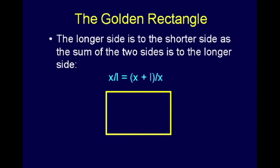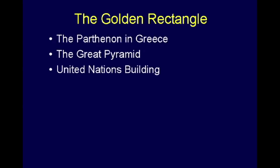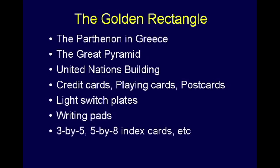That rectangle is called by artists, scientists, and mathematicians the golden rectangle. The ratio of the short side to the long side is 1.618. It has a peculiar characteristic: if you take a square out of it, you still end up with a golden rectangle. Take a square out of that, you end up with a golden rectangle, and so forth. It turns out the Parthenon in Greece, the Great Pyramid, the United Nations building, your credit cards, playing cards, postcards, the light switch at home, writing pads, three-by-five cards, five-by-eight cards — all are based on the golden rectangle, whether you realize it or not.